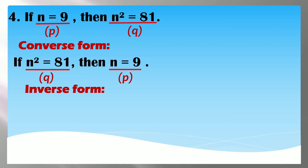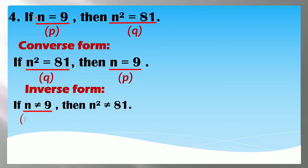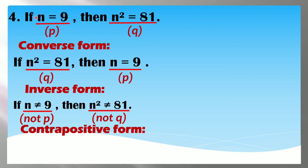Pag inverse naman, i-co-contradict natin yung statement — maglalagay lang tayo ng word na 'not.' Dahil ang ating given ay equation, instead of using the equal sign, magiging not equal na siya. So: if n is not equal to 9, then n squared is not equal to 81. And then pagka contrapositive, pagbabaliktarin lang natin silang dalawa: if n squared is not equal to 81, then n is not equal to 9.